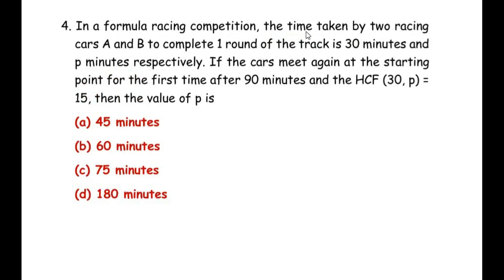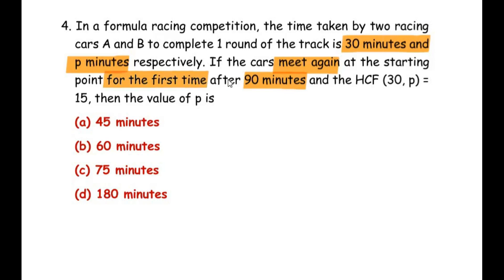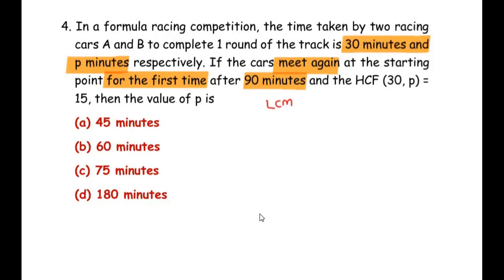In a formula racing competition, the time taken by two racing cars A and B to complete one round of the track is 30 minutes and P minutes respectively. If the cars meet again at the starting point for the first time after 90 minutes, and the HCF of 30 and P is 15, find the value of P. Here 30 and P are the given numbers. Since the cars meet for the first time after 90 minutes, 90 becomes the Lowest Common Multiple of 30 and P — because 'for the first time' clearly indicates it is the LCM.